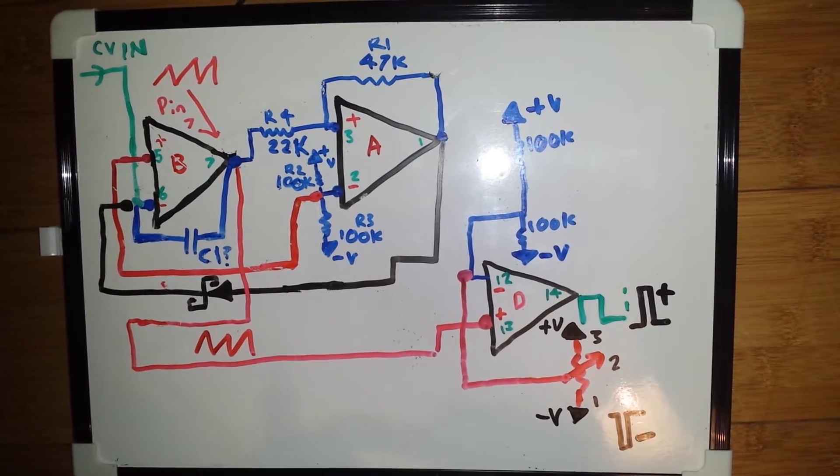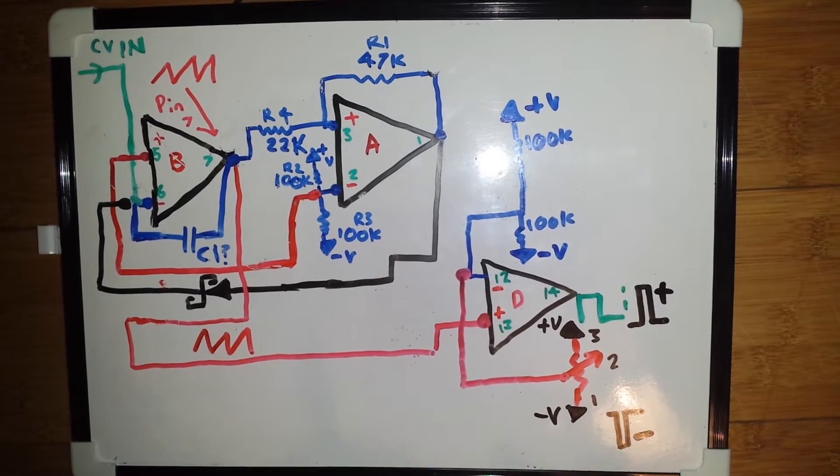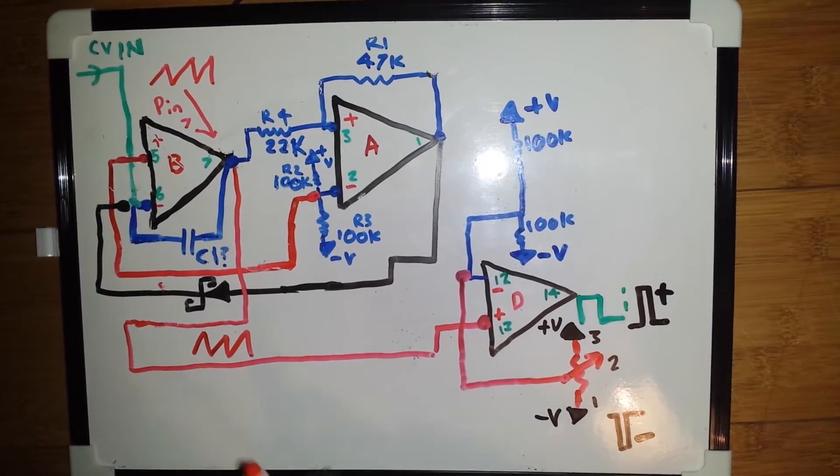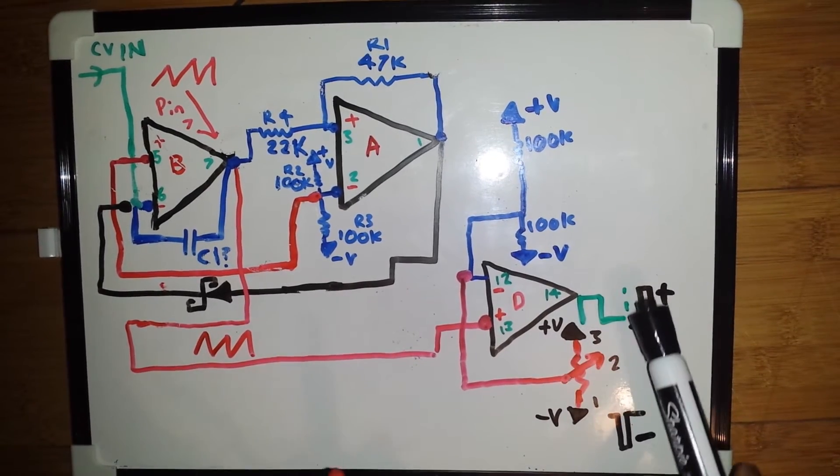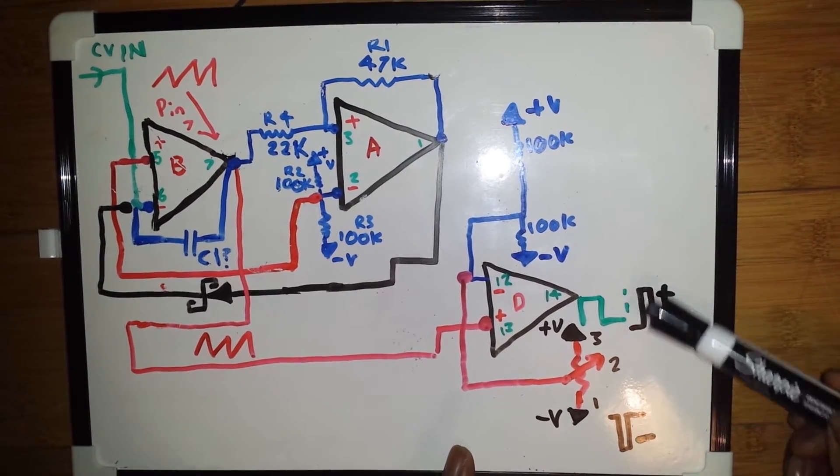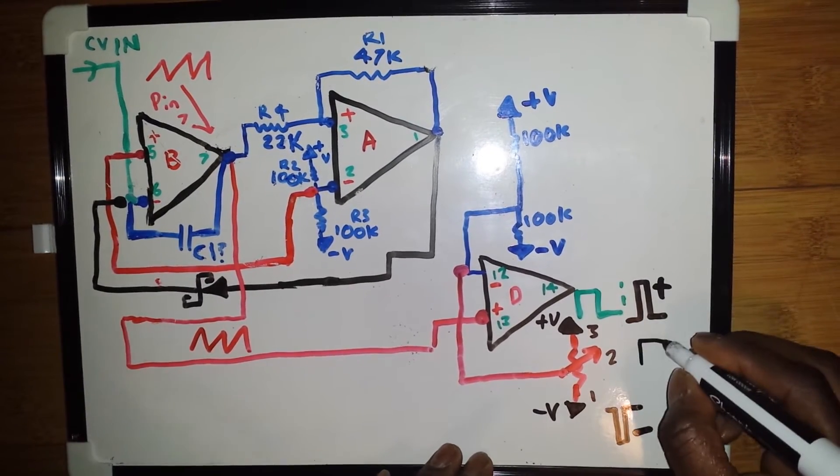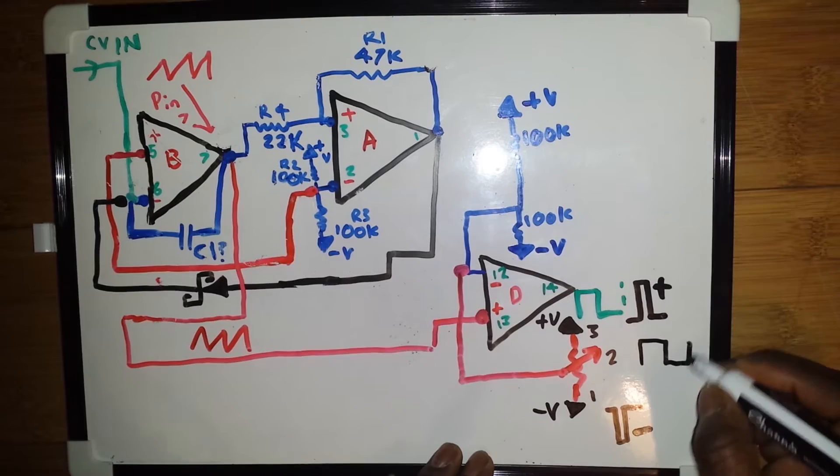Now what the other thing we can do to this is make it a width modulated square wave. So rather than having to turn the potentiometer to get it to go between a positive pulse or negative pulse or a 50% square.